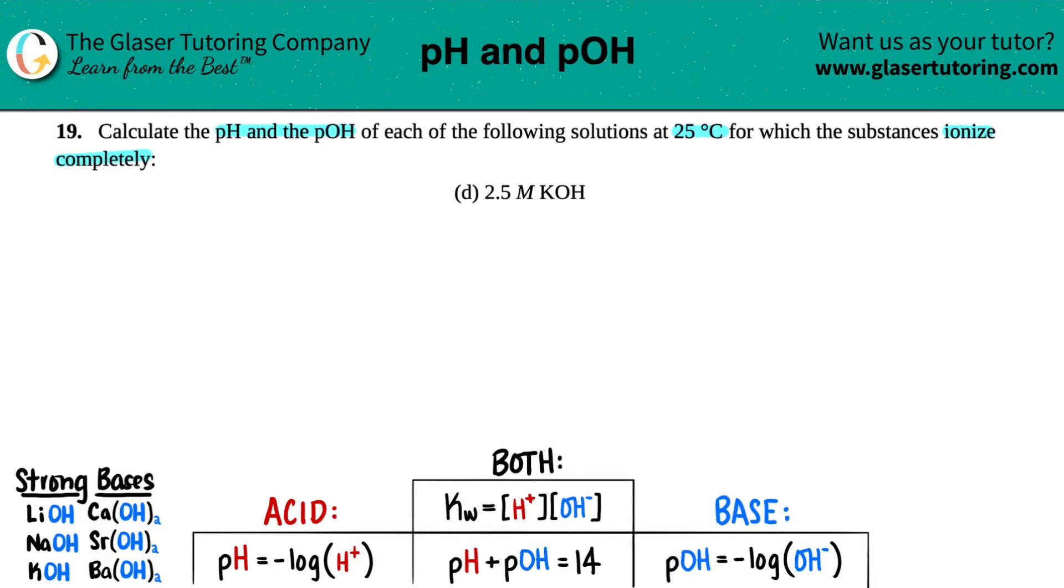Now they did give us a little hint and they did say that potassium hydroxide ionizes completely. Another way of saying ionize completely is that this compound will dissociate into its ions 100% of the time. Now they might not give you this little hint on a test or a quiz.